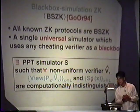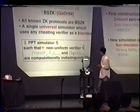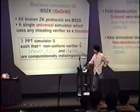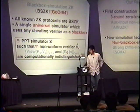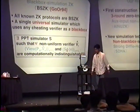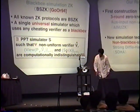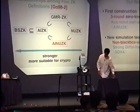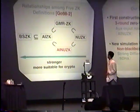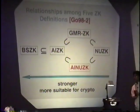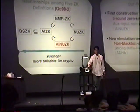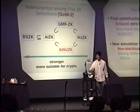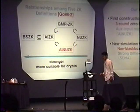All non-trivial zero-knowledge proofs use black-box simulation. And this definition requires the existence of a single universal simulator that uses any cheating verifier as a black box. So this notion is formalized as follows. Now we have five kinds of definitions, so let me show the relationships among them. ESPK is the strongest definition, so ESPK implies all other definitions.